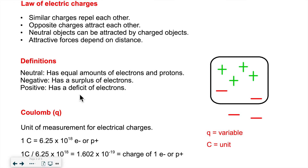So to summarize: neutral means the charges are equal; negative means there's a surplus of electrons; positive means there's a deficit of electrons. Electricity revolves around electrons much more than protons. The protons play a role, but they're stuck in the nucleus and cannot move. Electrons can move, and they can jump from one object to another, creating either a surplus or a deficit of electrons in a given substance.